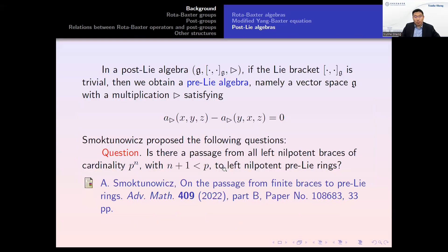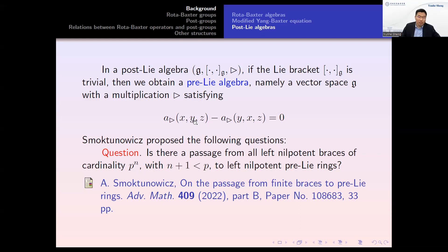From the definition, we can see that if in the post-Lie algebra the Lie bracket is trivial, then we obtain a pre-Lie algebra: a vector space G equipped with a multiplication triangle satisfying this associator-symmetry equality. So this equation says the associator is symmetric in the first two entries — this is also called a left-symmetric algebra. There are many terminologies for this algebra.